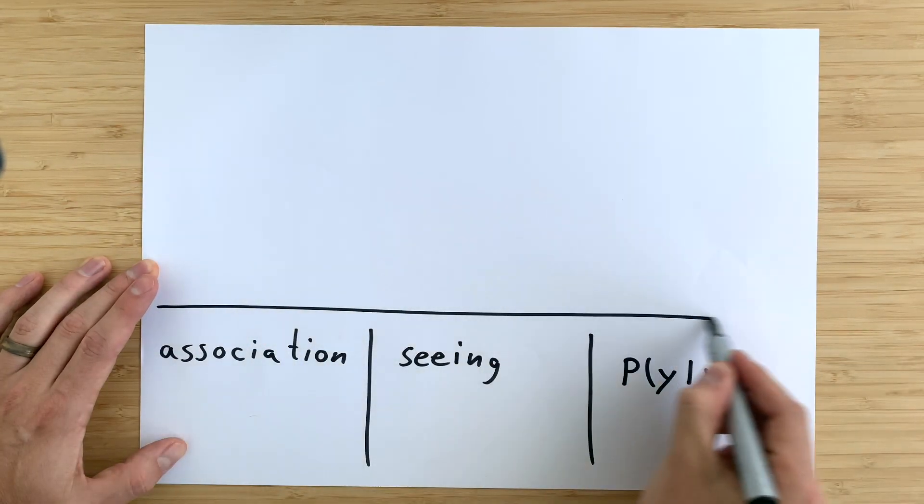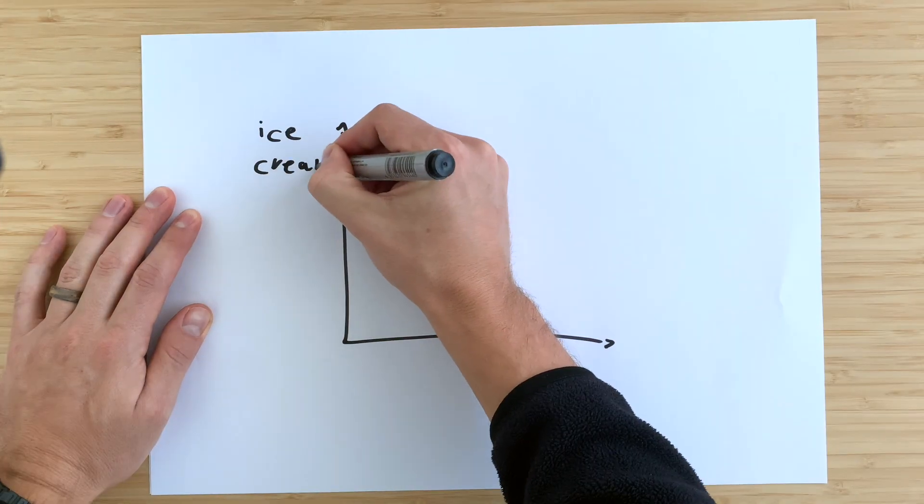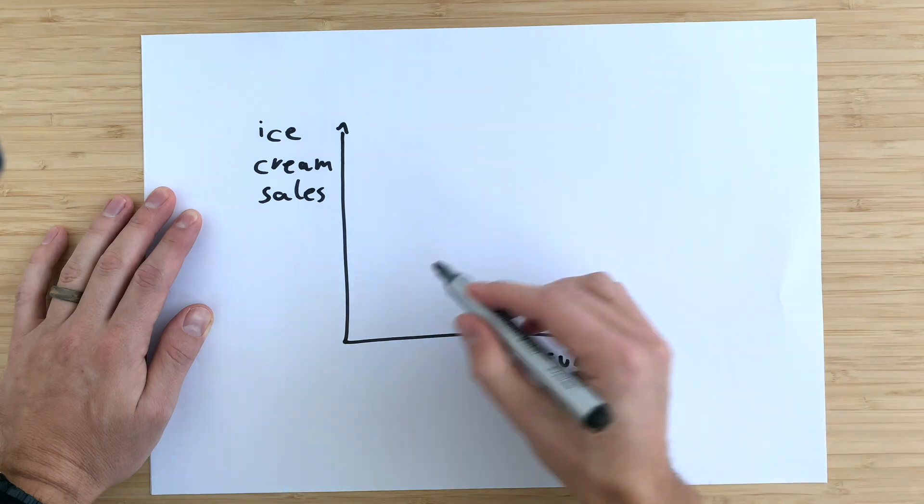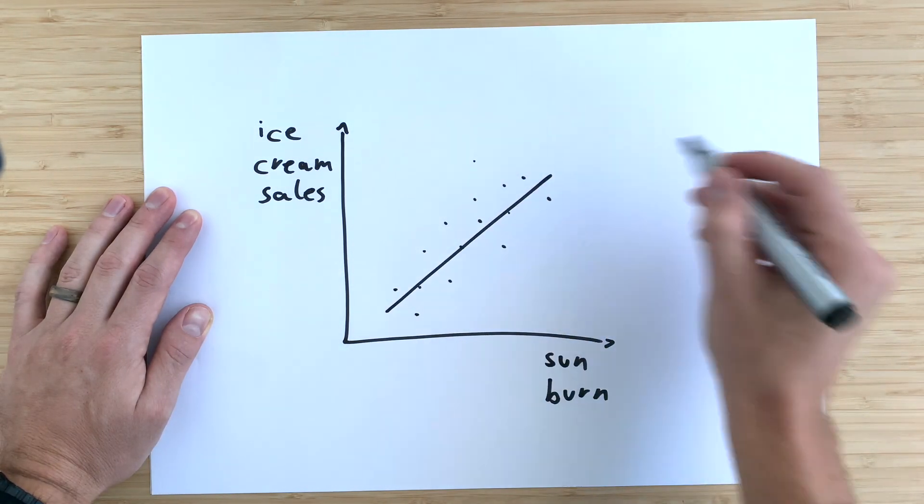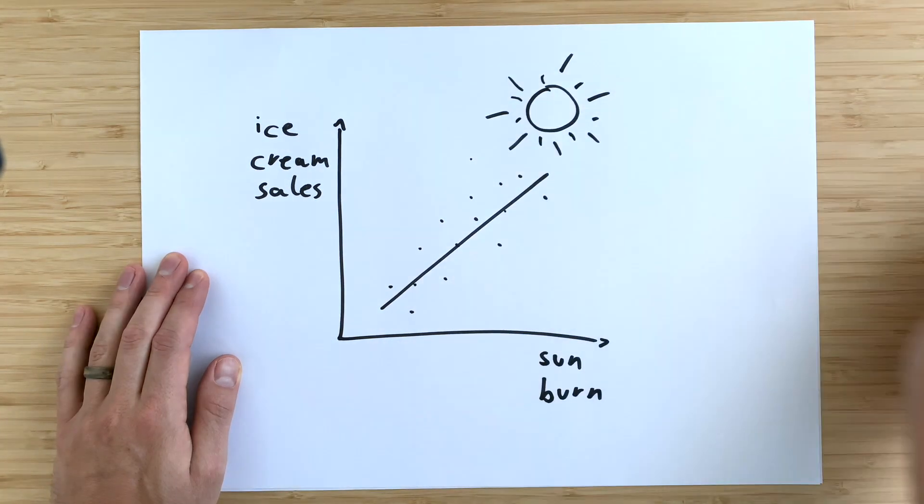It is about correlations, which are different from causations. Like on a hot day, when ice cream sales and the occurrence of sunburn go up, we can observe that this change goes hand in hand. But it's not that one is causing the other. It is merely a correlation that has the same cause creating it.